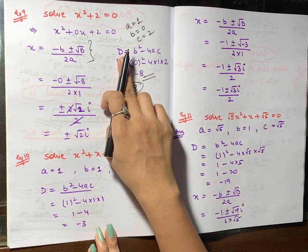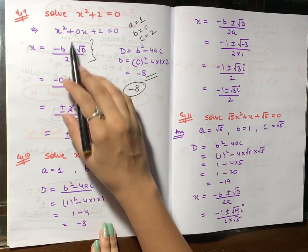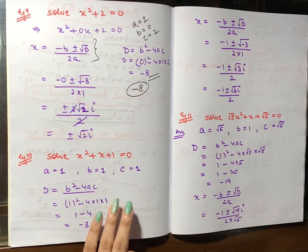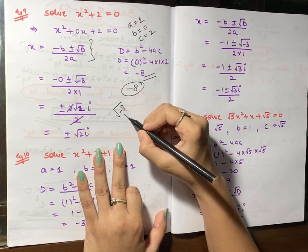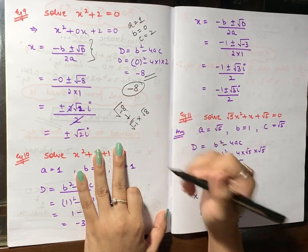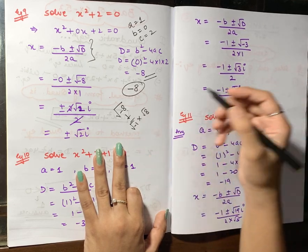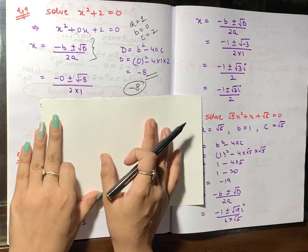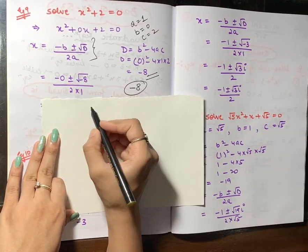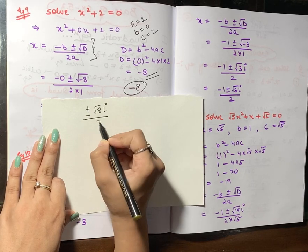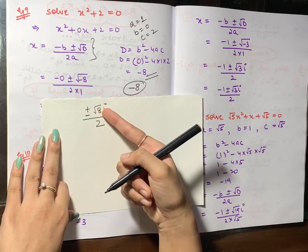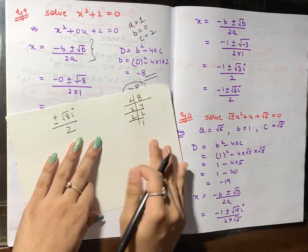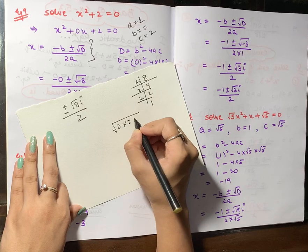Now put D = −8 into the formula: x = (−b ± √D) / 2a = (0 ± √(−8)) / 2. As we learned in the previous video, √(−8) = √(−1) × √8 = i√8. So x = ±i√8 / 2. Since √8 = 2√2, this becomes ±2i√2 / 2, and the 2s cancel to give ±i√2.